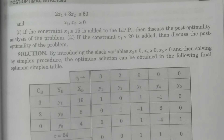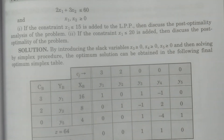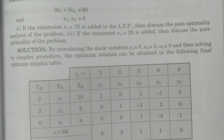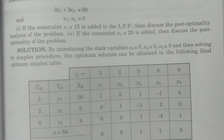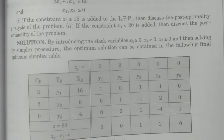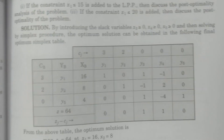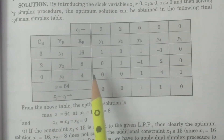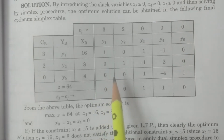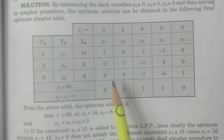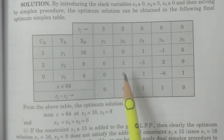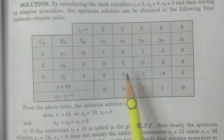Now see the solution. First, you have to solve the given LPP using the usual simplex procedure — by introducing slack variables and applying the simplex procedure. You have to obtain the final optimum simplex table. Once you get the optimum solution, you take the last simplex table. This is what the final simplex table obtained after applying the simplex procedure.